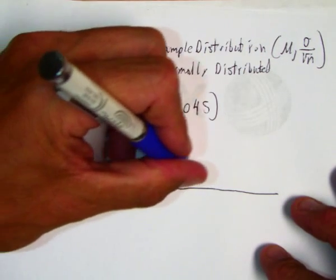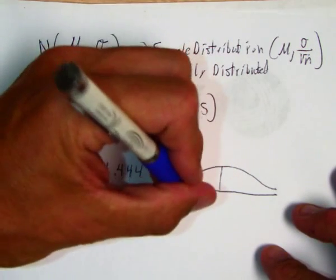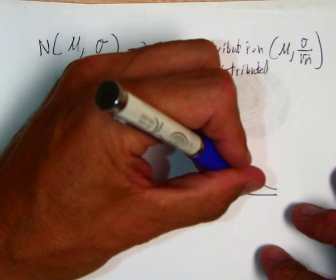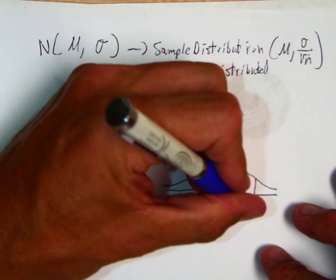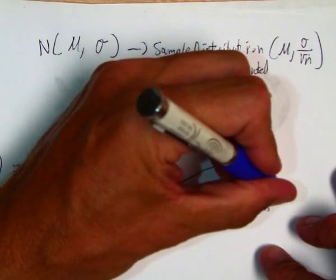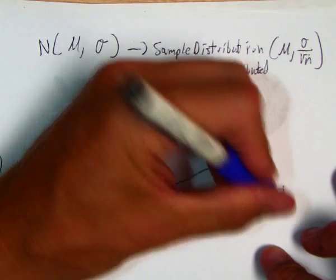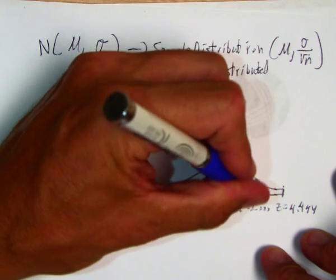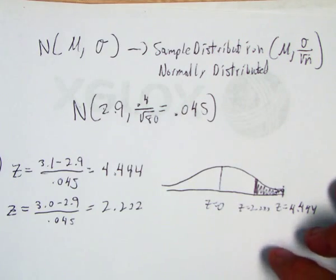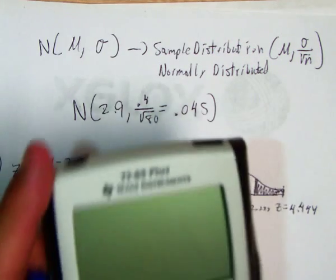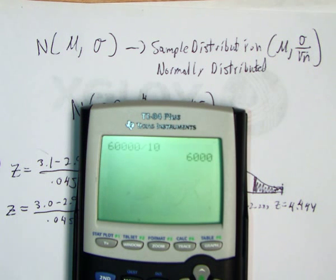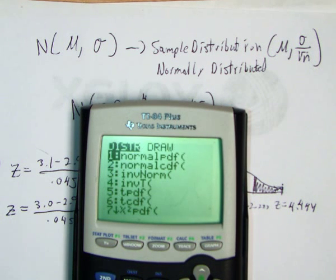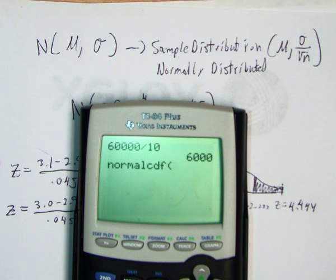This would be a z-score of 0, this would be 2.222, and this would be 4.444. We want to know if the mean of this entire fleet is somewhere in that area. How do we do that? Second distribution, norm CDF, go from 2.222 to 4.444.